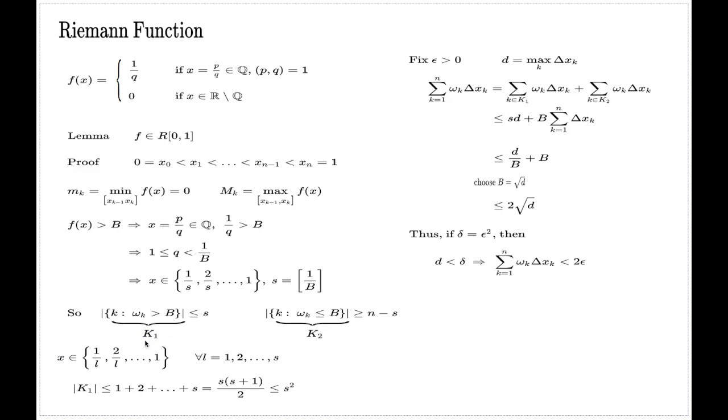So you see, the number of indices in the set K₁, we control it now not by the number S, but by a larger number S². Anyway, even though this number is larger, the proof is still fixable, and here's the fix.